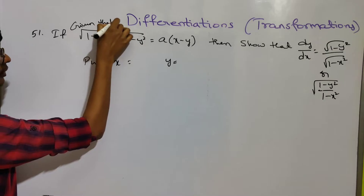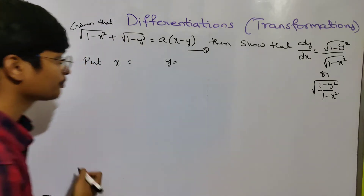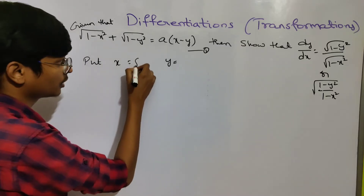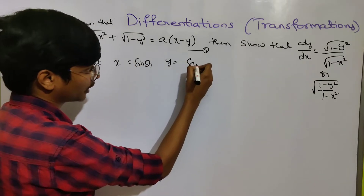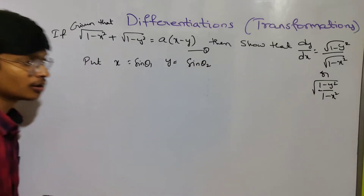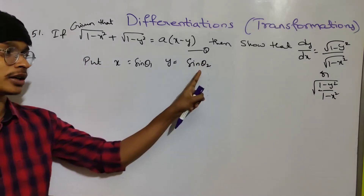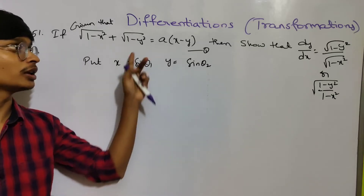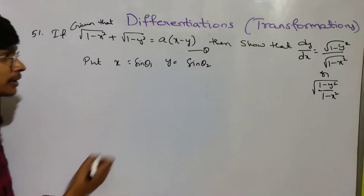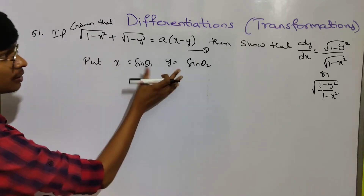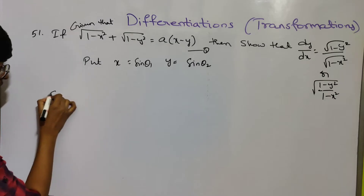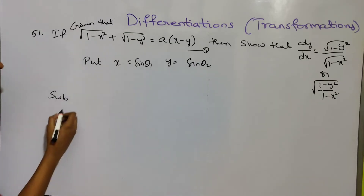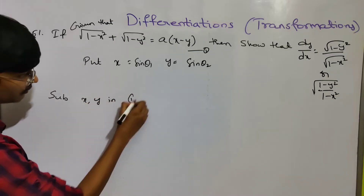Given that, put x = sin θ₁ and y = sin θ₂. We have sin θ₁ and sin θ₂. This problem uses the same values. Now we substitute x and y into equation 1.